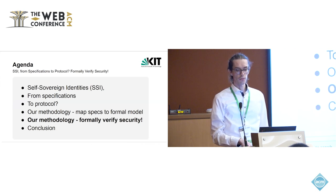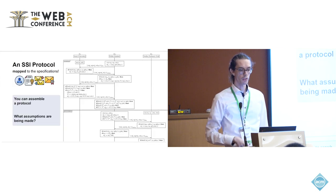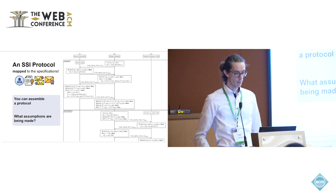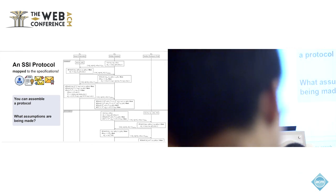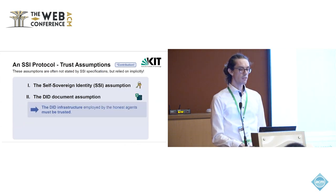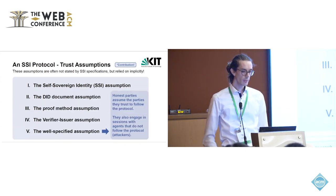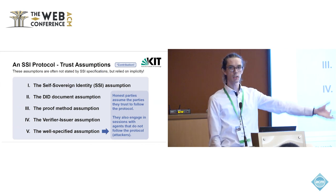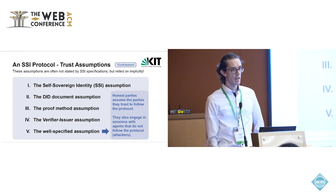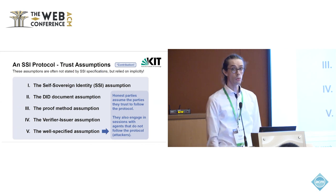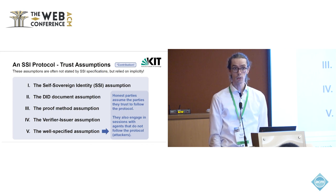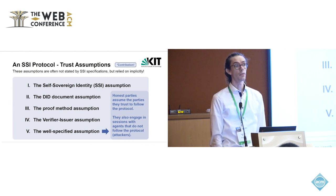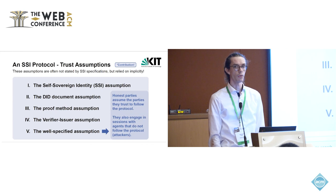Before formally verifying security, we need to think about assumptions. There are five of them, explained in more detail in the paper. We make them explicit based on the conceptual architecture. Most importantly, we allow honest participants who follow the protocol to engage in sessions with dishonest agents that are attackers — so for any role, there are also dishonest participants.